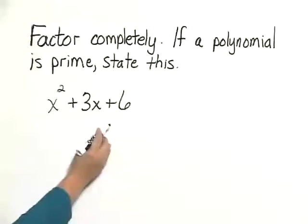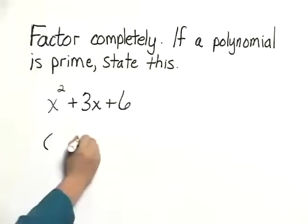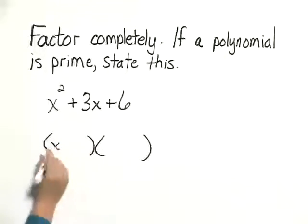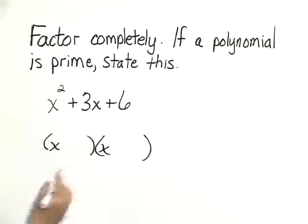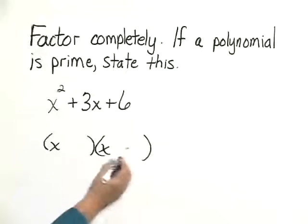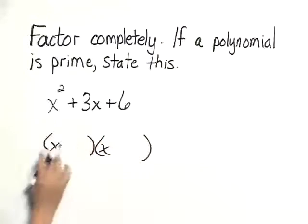If this trinomial factors, it would factor into something of the form binomial with an x here and an x here. The factors, the other terms here, would multiply to 6 and add to 3.